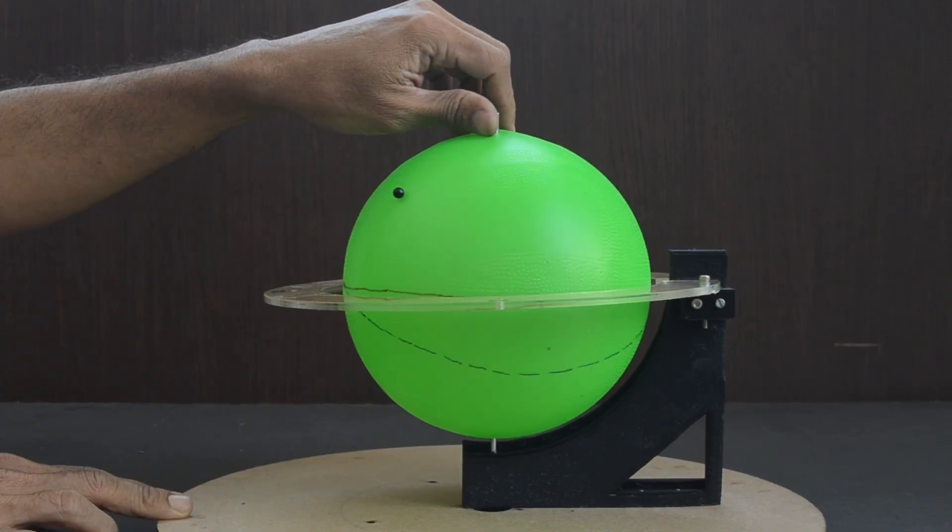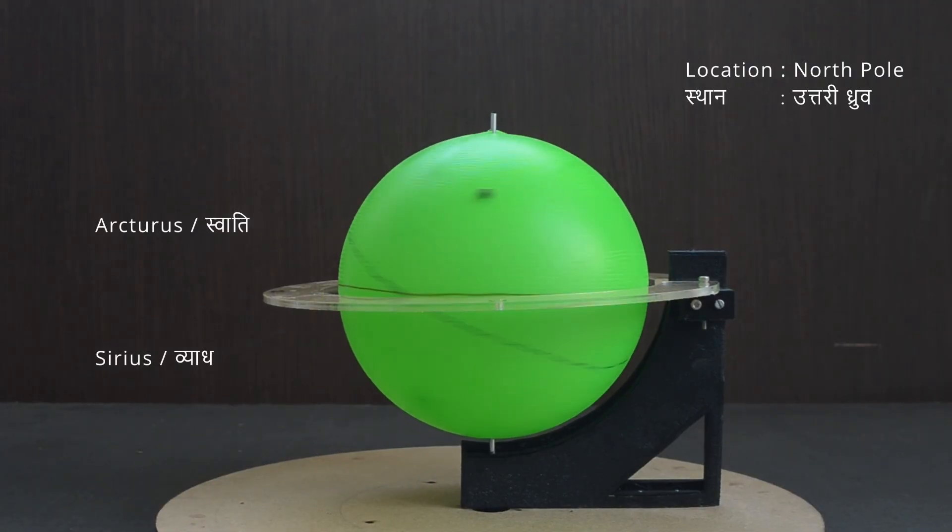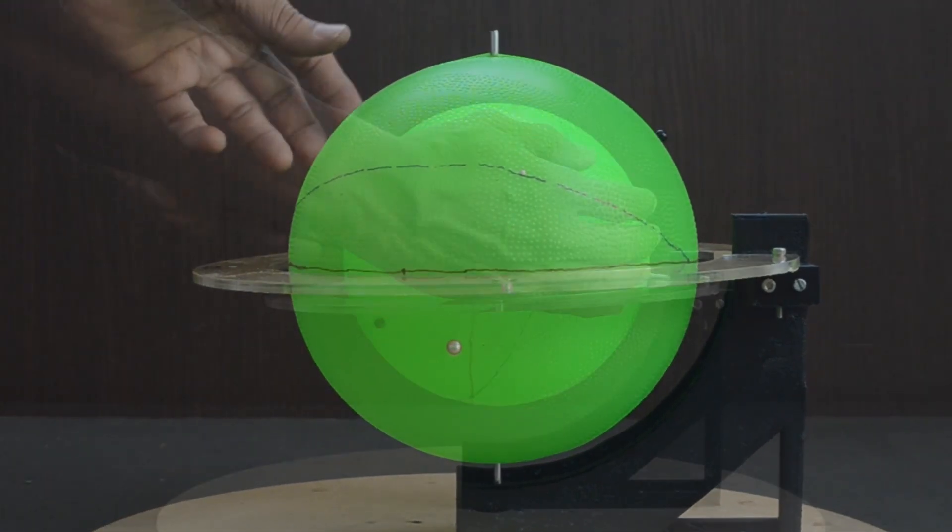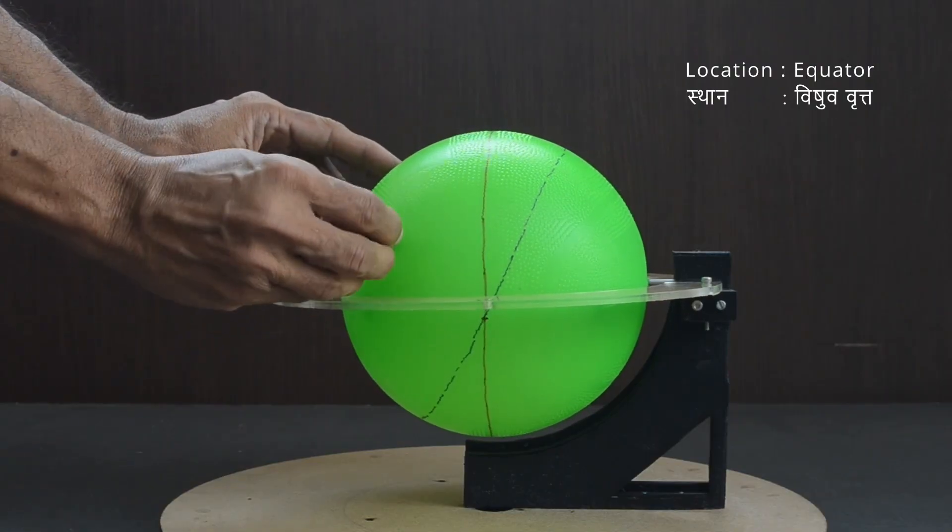At North Pole, this star is always present in the sky, while Sirius is never seen as it is always below the horizon. Same pattern of rise and set is followed by all other stars as well. Let us remove the stars for now.